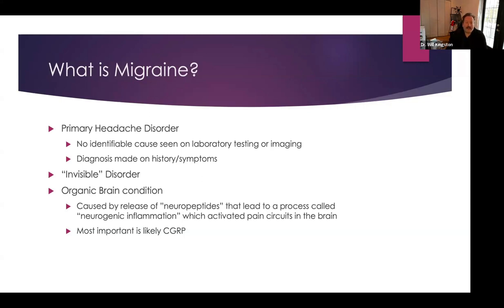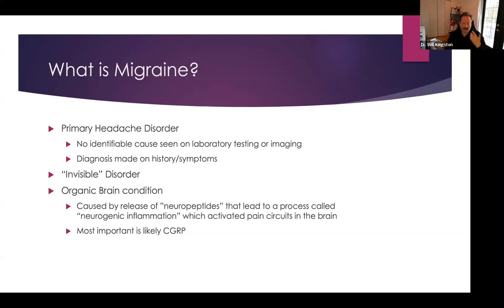Migraine is a condition that occurs throughout the life cycle. It may change in different phases of someone's life, like pregnancy or menstruation, all these other things that can also affect migraine, which I'll get into in a little bit.